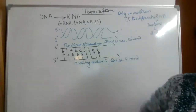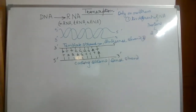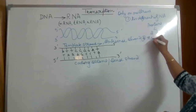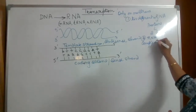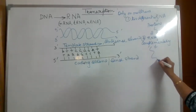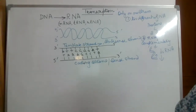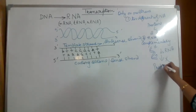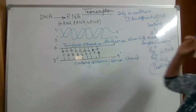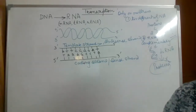So only one template strand participates in transcription. The second reason is: if both strands participated in transcription, the RNAs produced would be complementary to each other. When they are complementary to each other, they would form a double-stranded RNA, and the whole purpose of transcription would be lost because this double-stranded RNA would not be translated into proteins. So this is why transcription occurs only on one strand.